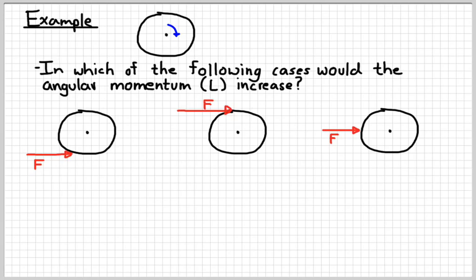In the first case, the one on the left, that force would cause a torque. But because it would be in the opposite direction as the momentum, that would cause the angular momentum to decrease. So the force on there would exert a counterclockwise torque, which is positive. The angular momentum is negative. So that's going to cause it to slow down.